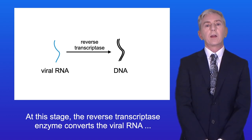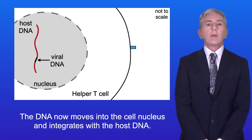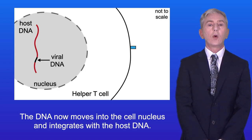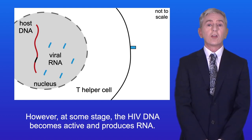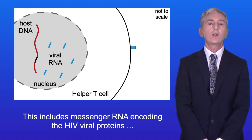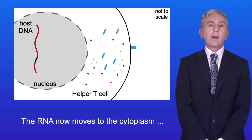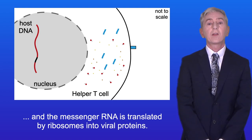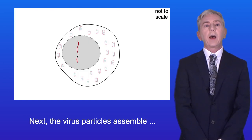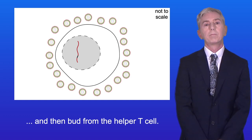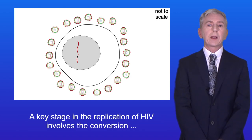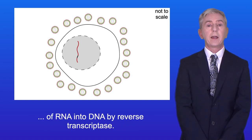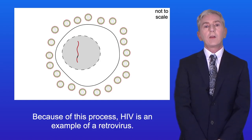The reverse transcriptase enzyme converts the viral RNA into double-stranded DNA. The DNA then moves into the cell nucleus and integrates with the host DNA. At this stage the viral DNA can remain dormant for several years. However, at some stage the HIV DNA becomes active and produces RNA, including messenger RNA encoding the HIV viral proteins and the HIV RNA genome. The messenger RNA is translated by ribosomes in the cytoplasm into viral proteins. Next, the virus particles assemble and bud from the helper T cell, and as they leave, each virus is surrounded by cell membrane forming the lipid envelope. Because of this conversion of RNA into DNA by reverse transcriptase, HIV is an example of a retrovirus.